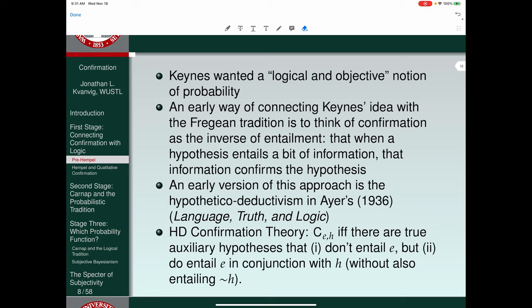So if H entails E, then E can confirm H. Now it's not just enough to have this entailment. We have to have some other things going on. So we have to have a role for auxiliary hypotheses, for example. And we don't want those auxiliary hypotheses themselves to do the entailing. We want the entailment to depend on H.